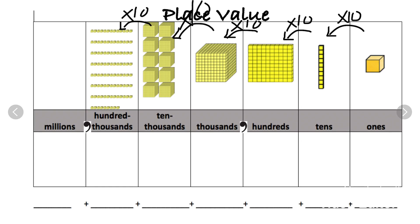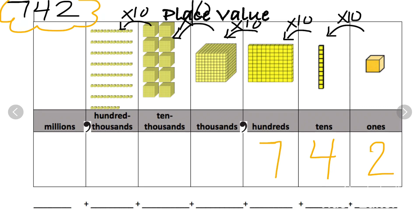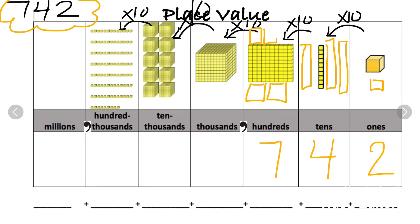Let's look at the number 742 on the place value chart. The 2 goes in the ones place, the 4 goes in the tens place, and the 7 goes in the hundreds place. So for 742, I have two ones — that's two unit cubes — four tens rods, and seven hundreds blocks.